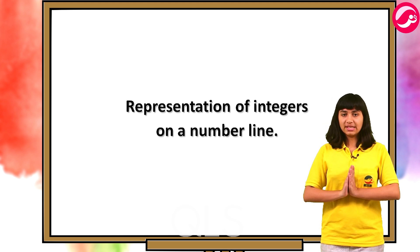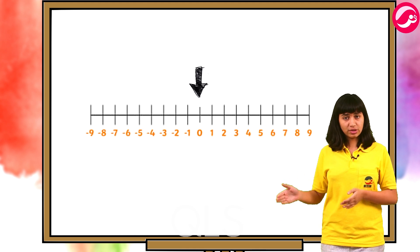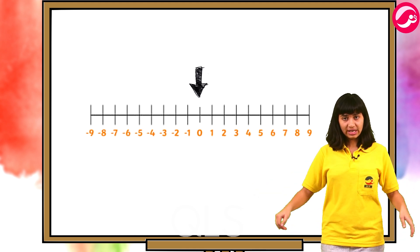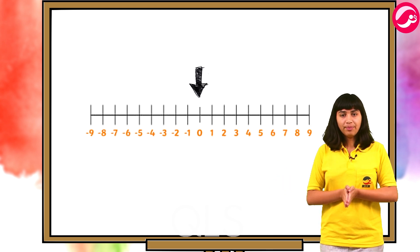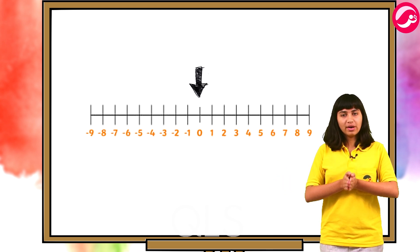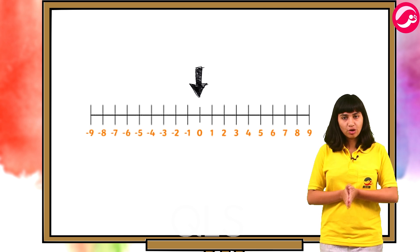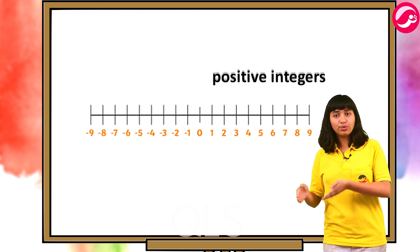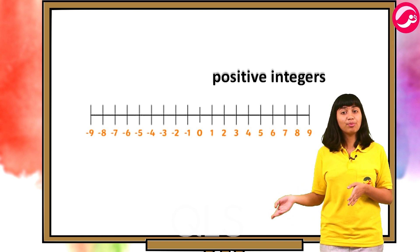Let's start representation. Draw a line and mark some points at equal distance as shown in the figure. Ek line banani hai, ekdum straight, usmein equal distance pe points banane hain. Mark a point zero in the middle. Points to the right of zero are positive integers like one, two, three, four, five.